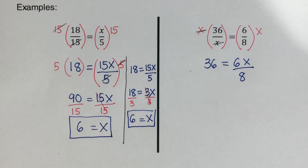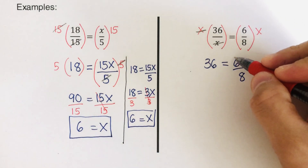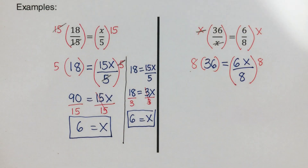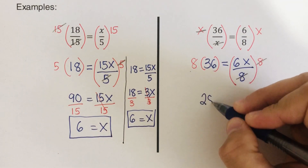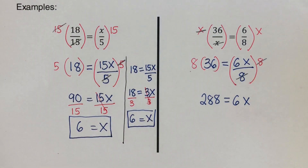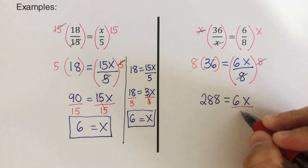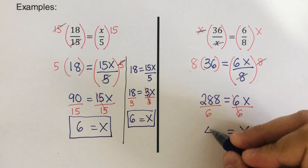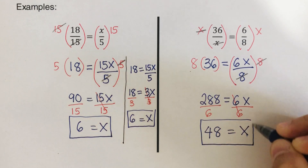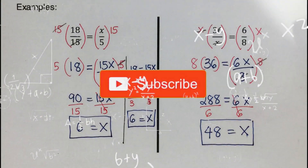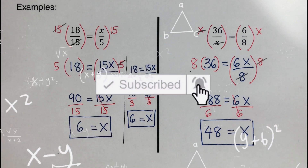Since 8 doesn't divide evenly into 6, we multiply both sides by 8, crossing the 8s out. That gives 8 times 36, which is 288, equal to 6x. Dividing both sides by 6, x equals 48. That is the value of the denominator in 36/x. If you found this video helpful, hit like and subscribe for more math videos!